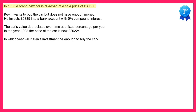The car is going to depreciate in value over time at a fixed percentage per year, and we're also told the value of the car in 1998. Between 1995 and 1998 there are three years, so we must have applied this fixed percentage three times. If we take the value of the car in 1995, which is £39,500, and multiply it by this fixed rate three times, we would end up with £20,224.